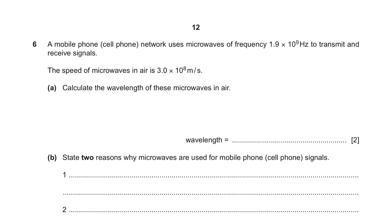Question 6. A mobile phone network uses microwaves of frequency 1.9 x 10^9 hertz to transmit and receive signals. The speed of microwave in air is 3 x 10^8 meters per second. Part A: Calculate the wavelength of these microwaves in air. When they ask you to calculate something, you need to know the formula. This is about wavelength and speed, so we use the formula V equals frequency times wavelength. We're trying to find the wavelength, so it is speed divided by frequency. Both the speed and frequency are already given, so you will get a final answer of wavelength which is 0.16 meters. Remember that the unit should be in meter because this is the SI unit.